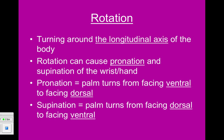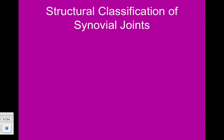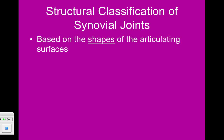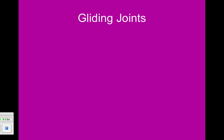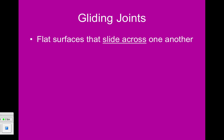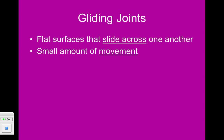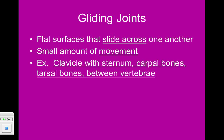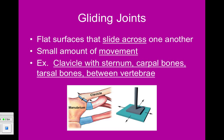Based on these movements, we can classify our synovial joints by the shape of the articulating surface, which determines the movement. There are six different types of joints. The first is the gliding joint, which has flat surfaces that slide across each other, providing very small movement in any direction. Examples include where the clavicle meets the sternum, between the carpal bones, between the tarsal bones, and between the vertebrae. The manubrium is the upper part of the sternum, and it can move in any direction.